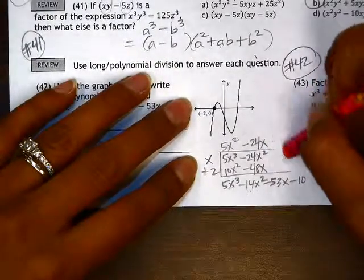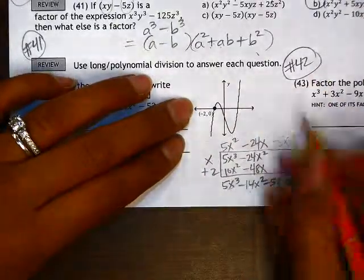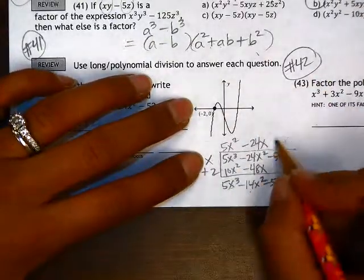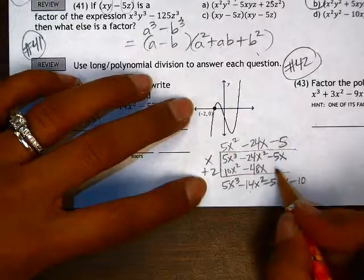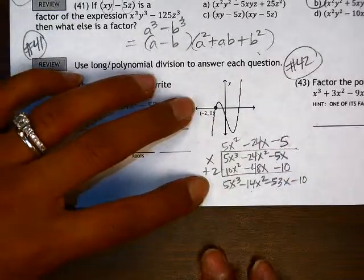This should go right here, which means this is a negative 5, and this is a negative 10. No remainder.